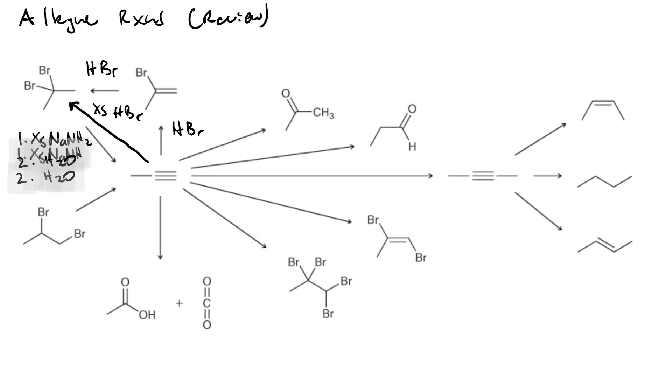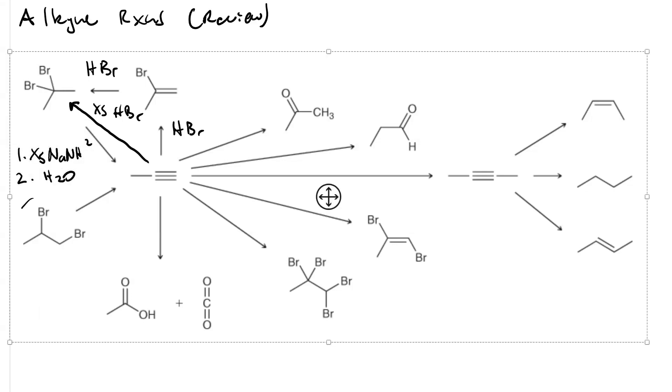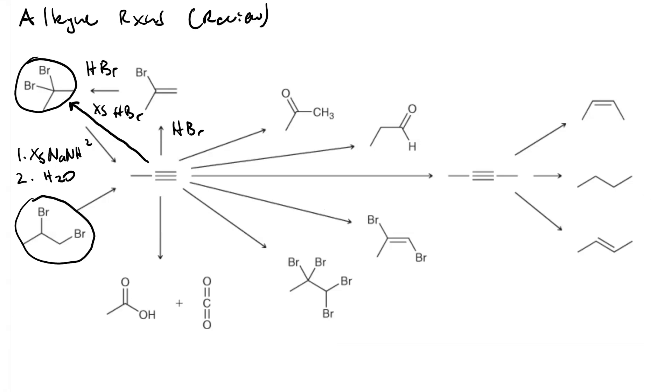And in fact, you can make the alkyne from using this double elimination reaction from the vicinal dihalide or the geminal dihalide.